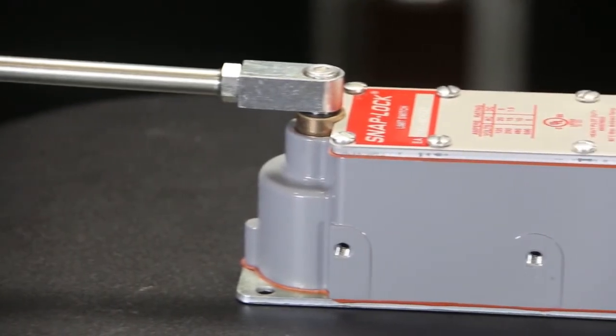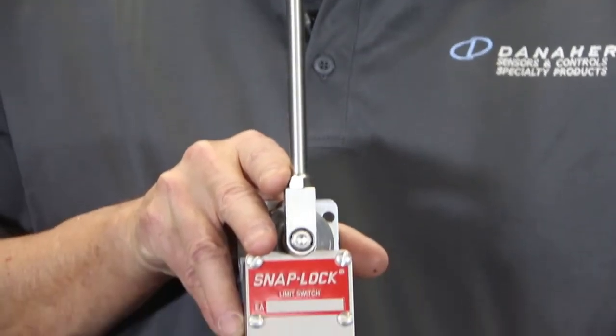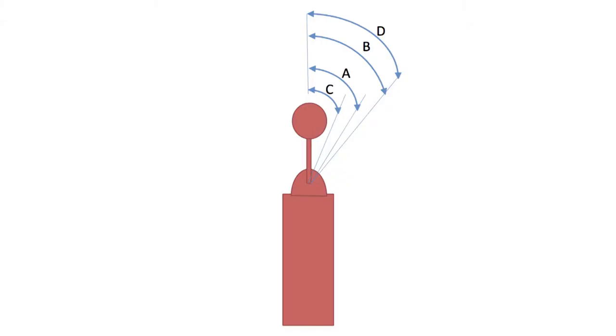Reset angle C is the distance back from the trip point that the lever needs to travel for the contacts to reset. Total travel D is the distance the lever can travel before you break the internal mechanism.